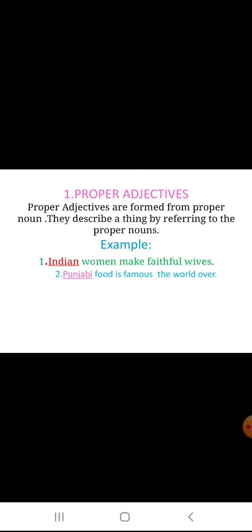Proper adjectives are formed from proper nouns, especially from the names of places and persons. For example, this is a Japanese doll. Which doll? Japanese. Japanese is a proper adjective here.